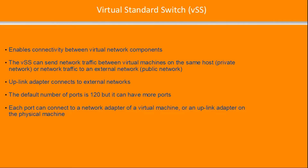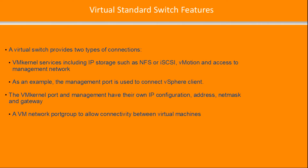The virtual standard switch can be configured with 120 ports by default, however it can be set up to add more as required. Each port on the virtual standard switch can connect to a network adapter of a virtual machine or an uplink adapter on the physical machine. A virtual switch provides two types of connections.